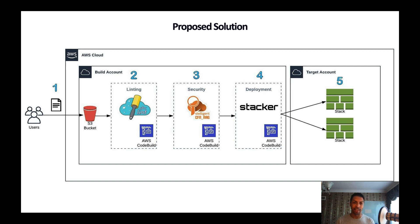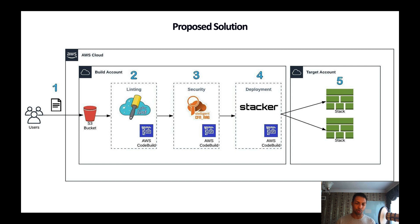One thing you'll notice is that the solution is far from being perfect. For example, in the first stage we're uploading code to an S3 bucket. Really what we want is a version control system like GitHub or Bitbucket, but I decided to go with S3 just to simplify the solution for learning purposes. Once you learn how the pipeline works and how all the stages work, it's very easy to just replace S3 with a version control system.